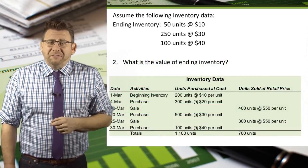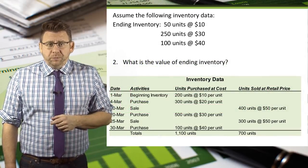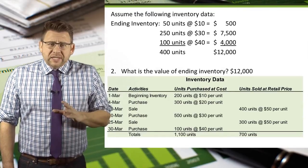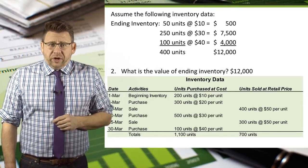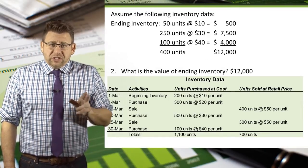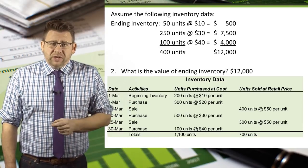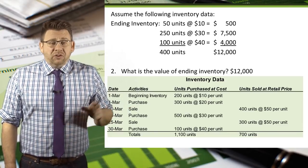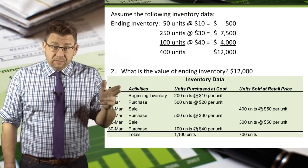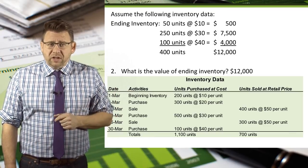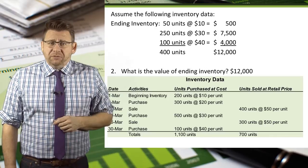Now let's figure out the value of the ending inventory. Since we are given the amounts in ending inventory, just total the units — in this case 400 units — and total the value of those units, in this case $12,000. And that is the value of the ending inventory.